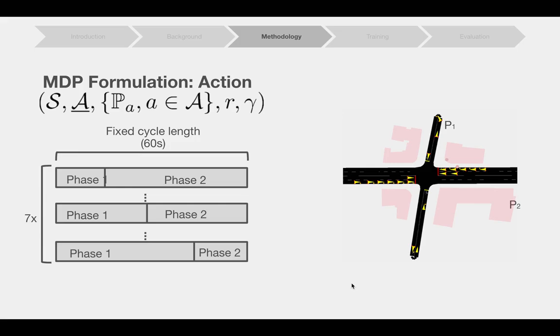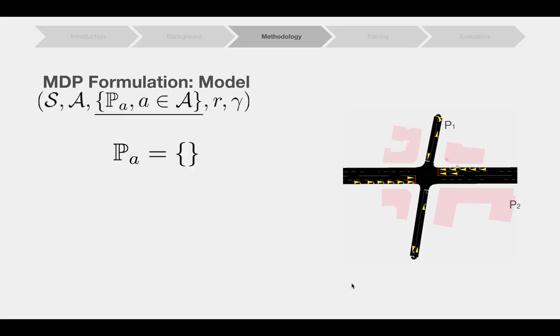Our action space is constrained to fixed cycles. There are seven distinct actions which differ only by the timing assignment from phase 1 to phase 2. One of the strengths from the reinforcement learning based approaches is the ability to learn directly from interacting with the environment, not from estimating a model from the traffic pattern. So we opt for not specifying a model.